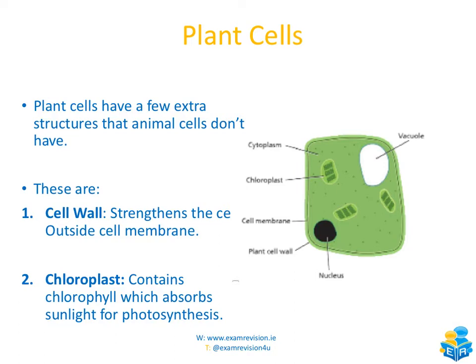Plant cells are a little bit particular because they have a couple of extra structures that animal cells don't have. Two of the main structures are a cell wall and a chloroplast. The plant cell wall also surrounds the cell and is outside the cell membrane — it's the very outside layer of a plant cell — and what it does is it strengthens the cell. The chloroplast contains chlorophyll, which absorbs the sunlight for photosynthesis. Plants are autotrophs, so they make their own food, and because of that they need to absorb as much sunlight as possible. The chloroplasts are responsible for absorbing all of the sunlight needed for photosynthesis.